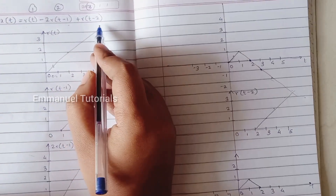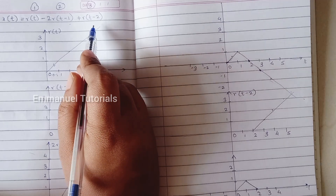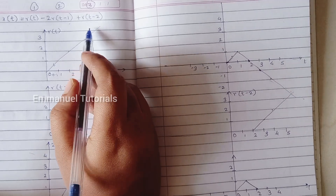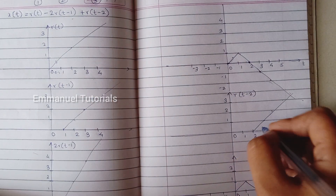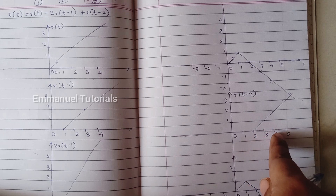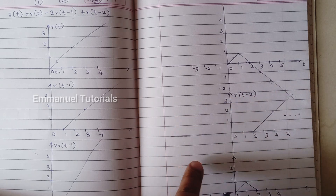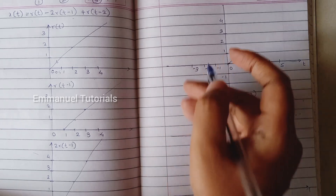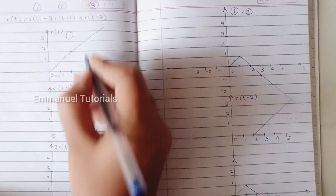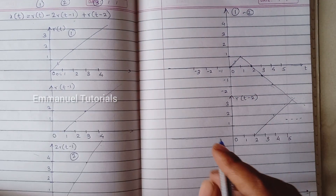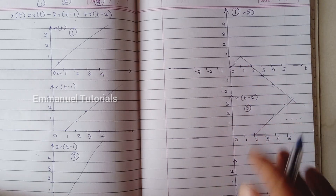Now, the last part of the signal which we are going to add is R(T minus 2), which is a delayed version of the unit ramp signal shifted to the right by 2. So the amplitude is going to be 1 at T=3, 2 at T=4, 3 at T=5 and so on. The last thing we need to do is add these two signals together — this is part 1 minus part 2, and now we are going to add it to the third part of the signal.